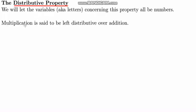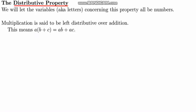First, multiplication is said to be left distributive over addition. What left distributive means is that the number a times the quantity b plus c is equal to a times b plus a times c. You can think of it as the a migrating over to each term: a goes over here giving a times b, and then a goes over here giving a times c.